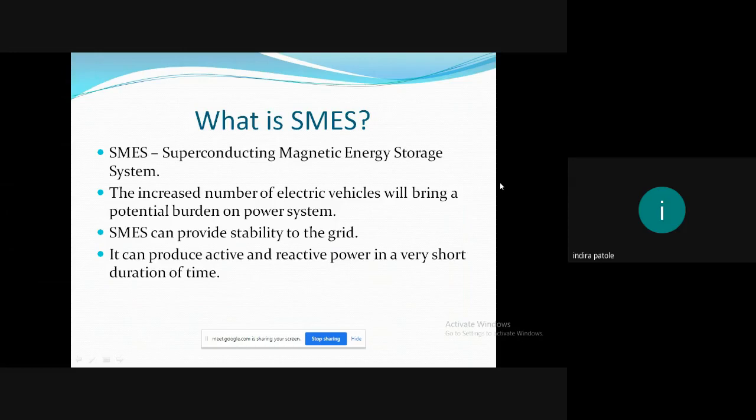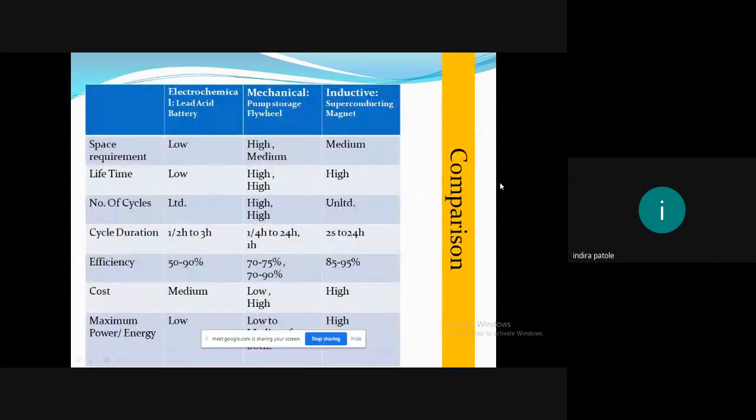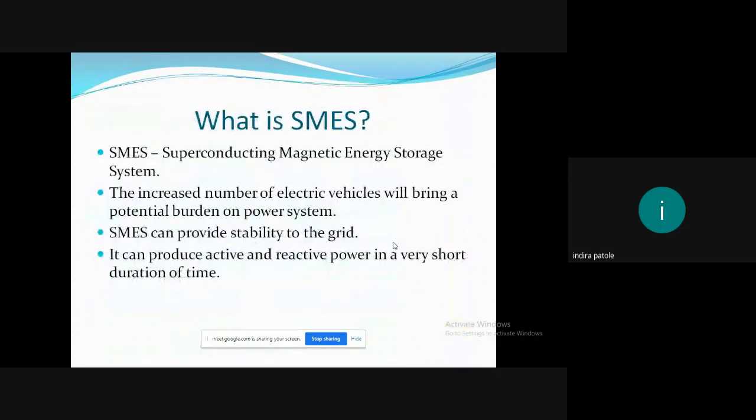The charging and discharging of EVs, especially the lithium-ion battery EVs, affects the grid significantly as the voltage in the grid might decrease. Hence, to avoid such situation and to curtail to the rising demands, SMES acts as a power compensator, which can provide active and reactive power in a very short period of time. As you saw in the last slide, the cycle duration, it is 2 seconds to 24 hours. Because of this cycle duration, it provides active and reactive power, so this kind of system is considered widely.